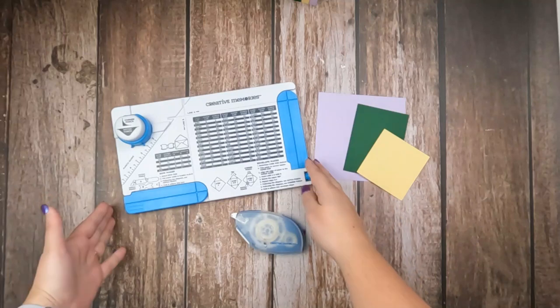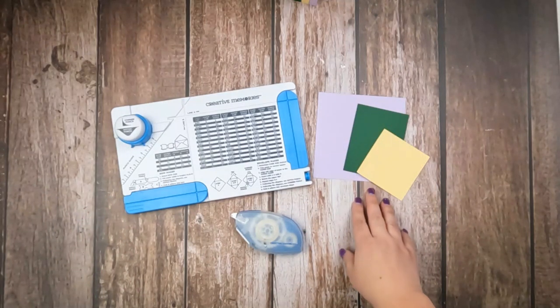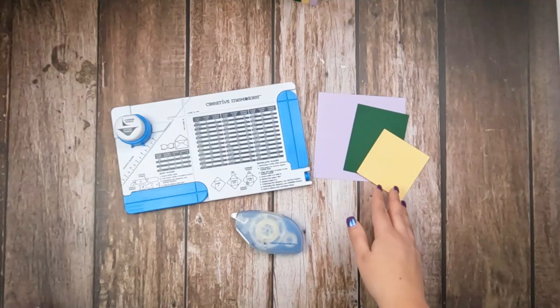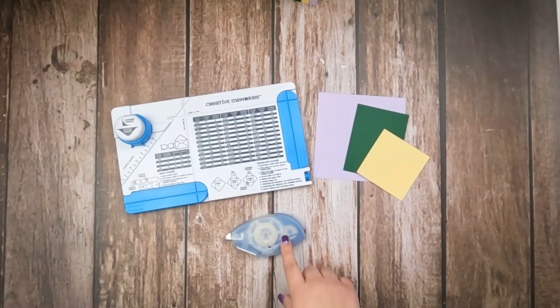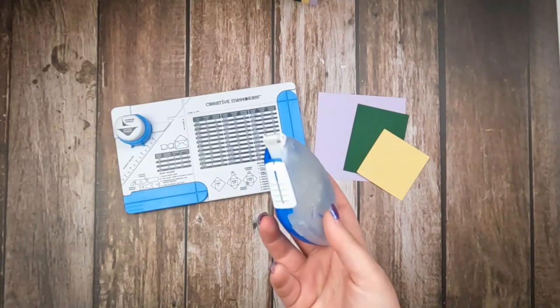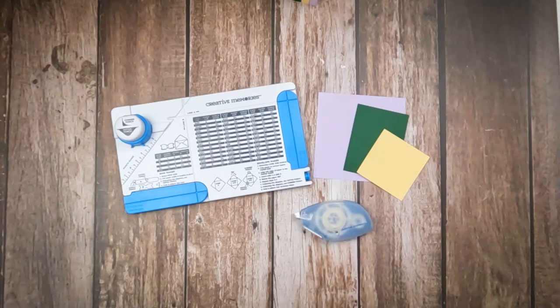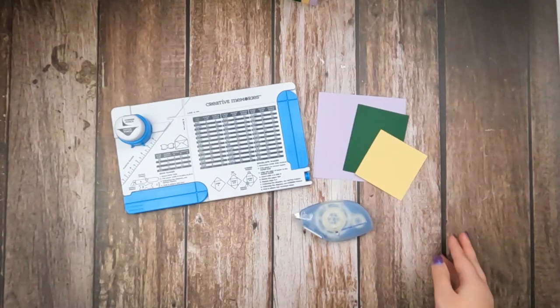To complete this project, you will need the Creative Memories envelope and bow creator, some scrap pieces of cardstock or you can use a full sheet if you like. You'll need a tape runner, the regular tape runner not repositionable. You could also probably use photo tape. And then you might need your trimmer depending upon the size of your scraps.